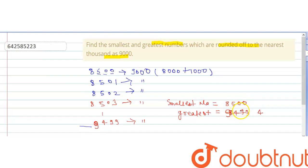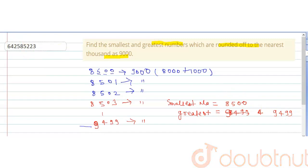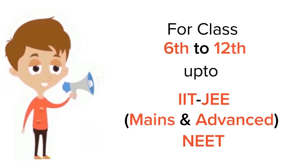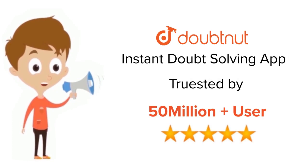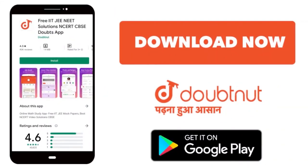...will be 9499. This is the answer for this question. Thank you. For class 6–12, IIT JEE, and NEET level — trusted by more than 5 crore students — download DoubtNet today.